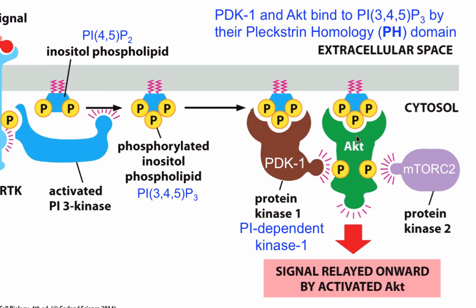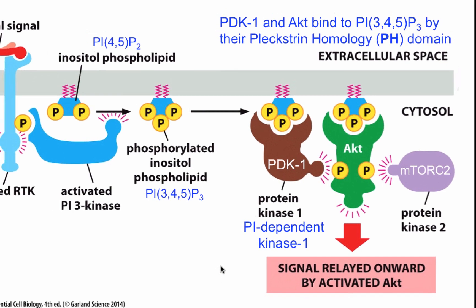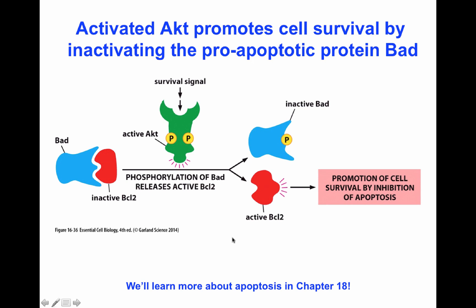AKT will be recruited by binding to PIP3 on the membrane. Another protein recruited to the membrane will be PDK1, or PI-dependent kinase 1. Once PDK1 binds to PIP3 through its PH domain, it gets activated and is able to phosphorylate AKT on a threonine residue. There is also another soluble kinase called mTORC2 that will then phosphorylate AKT at a different location. This doubly phosphorylated AKT can detach from the cytosolic side of the membrane and diffuse to phosphorylate targets downstream that are required for signaling and survival.